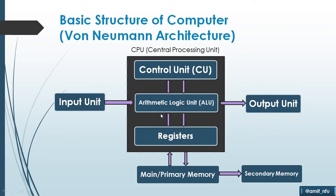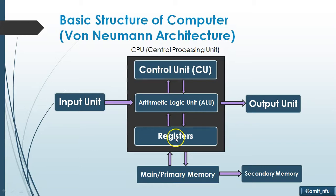This particular slide shows the Von Neumann architecture. Through input devices, data and instructions go into the CPU — the central processing unit — which comprises many parts like the control unit, ALU, and registers. The output is conveyed by the CPU to output units like monitor and printers. In between, primary memory RAM, ROM, or secondary memory hard disk support the CPU for any storage needs.